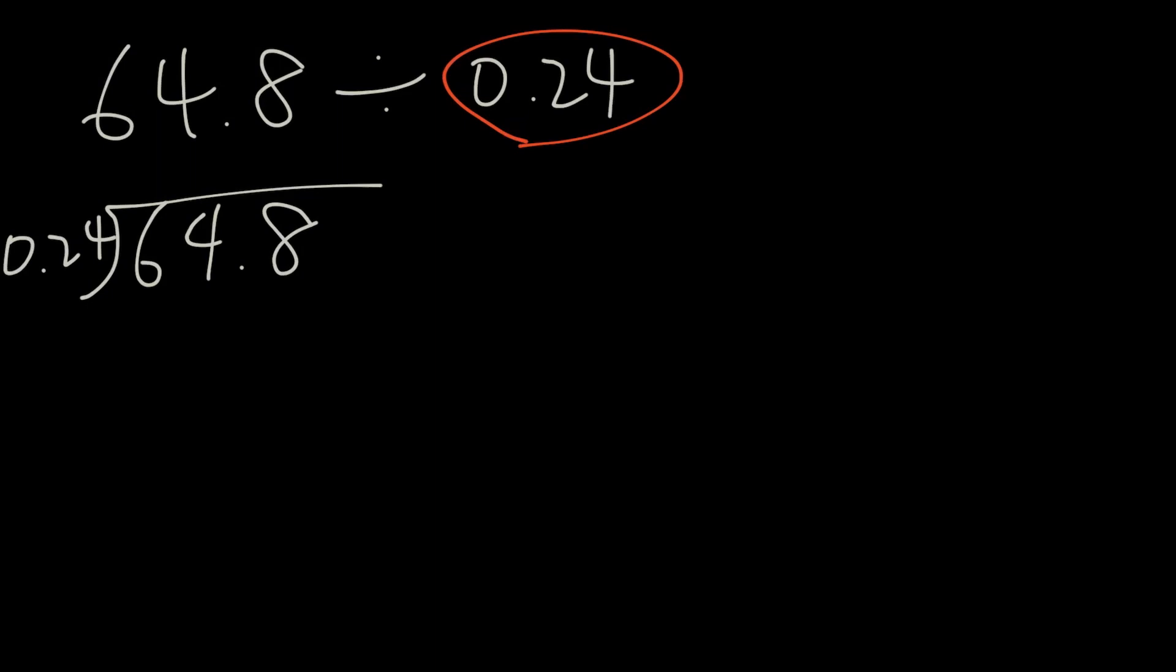The divisor needs to move two spaces over, and we need to do the same inside. When there's an extra space with no number, then we need to fill in a zero because the decimal point is now here. So if we rewrite this question, it will become 6480 divided by 24.